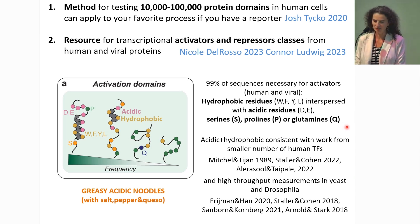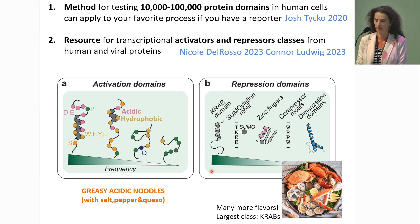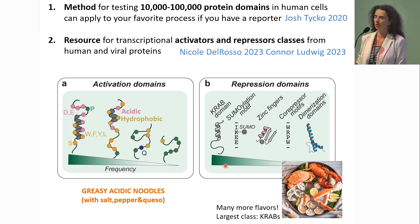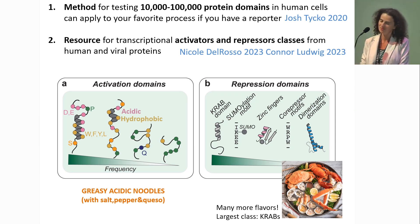There are many more flavors of repressors, but the dominant category — about 400 of them — are KRAB domains, and I'm going to spend the rest of my time talking about them. We also found surprisingly hundreds of repressive domains containing SUMOylation motifs, suggesting there is a large SUMOylation and SUMO-interaction network in human cells. Interestingly, SUMO goes up with stress and viral infection. We don't quite understand this network yet, so we are digging deeper. But now let me talk more about KRABs, which are more interesting than noodles.